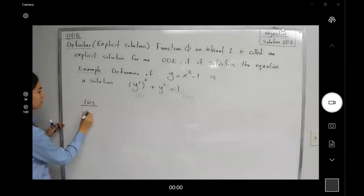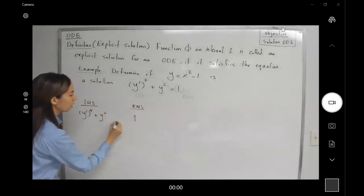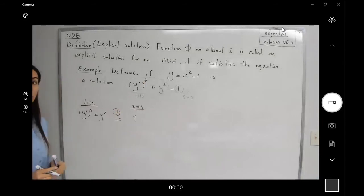Let us write down the left-hand side as (y')⁴ + y², and the right-hand side, which is just the constant 1. Let's check to see if these two are equal to each other.